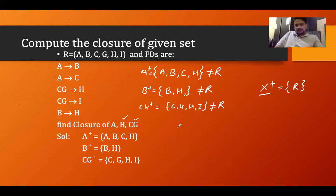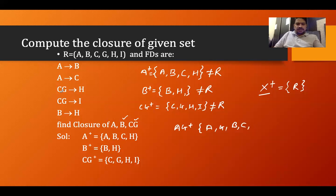Let's find the closure of AG. A and G come in. A determines B and A determines C. Then B determines H. Then C and G together determine I. So the closure of AG is {A, G, B, C, H, I} — all attributes are there, it is equal to R.